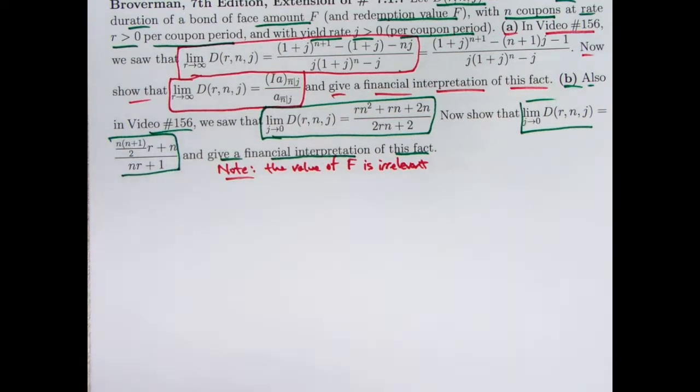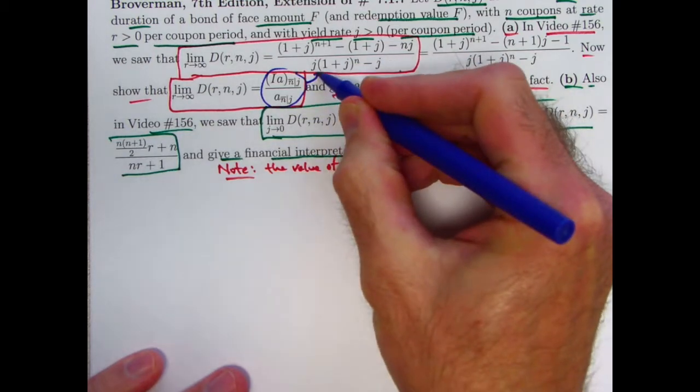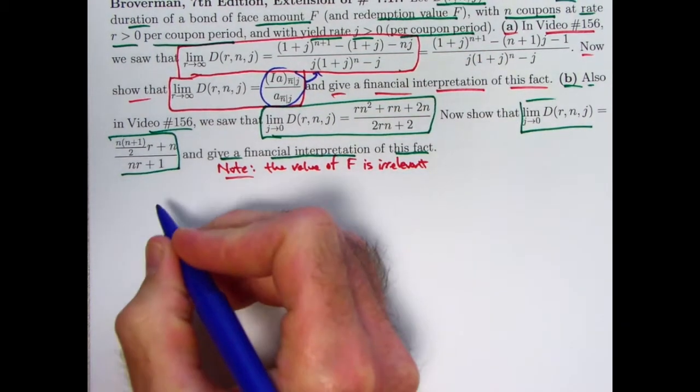That doesn't look a ton simpler, it's that it equals this. However, based on the way this is written, it's a little easier to give a financial interpretation of this. Give a financial interpretation of this fact, if we think about it in the right way. All right. So let's first start by just verifying that this expression simplifies to this. So this will be some algebra with formulas.